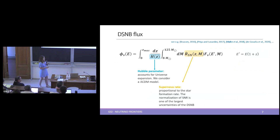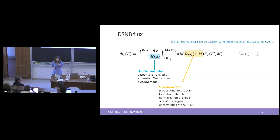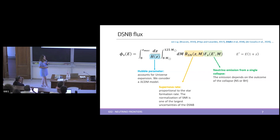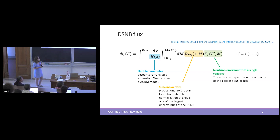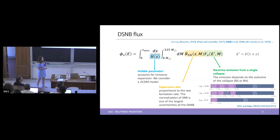Another term in the DSNB expression is the supernova rate, which is proportional to the star formation rate. The normalization of the supernova rate gives one of the largest uncertainties of the DSNB flux. The last term is the neutrino emission from a single collapse. This depends on whether the outcome is a neutron star or black hole, and the fraction of collapses forming a black hole is still debated. For that reason, we considered three different values for this black hole fraction.